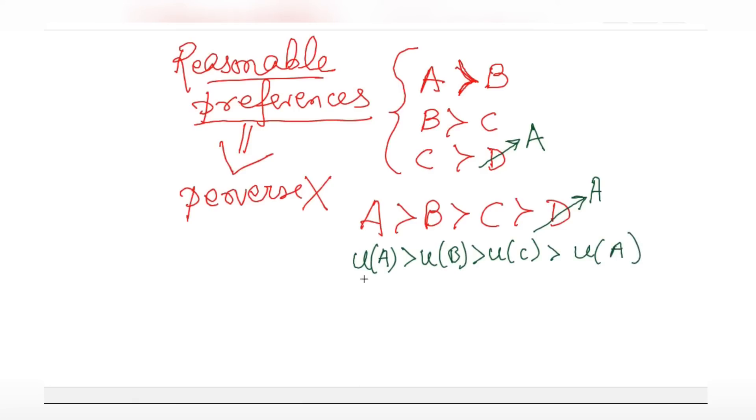How is this possible? This is called intransitivity. So this kind of a situation cannot happen for a utility function or rather for any function. Hence we cannot do this. So when this is the underlying preference structure we cannot have a utility function associated with it.